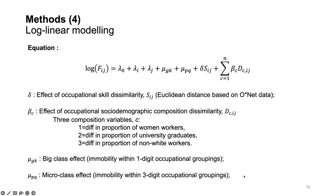We estimate a log-linear model where the dependent variable is the log of the frequency count — the number of workers in a given cell of our dataset, aggregated at the level of pairs of occupations. We know how many workers underwent each occupational transition over five quarters. We have a parameter for skill dissimilarity and three parameters for differences in sociodemographic composition.